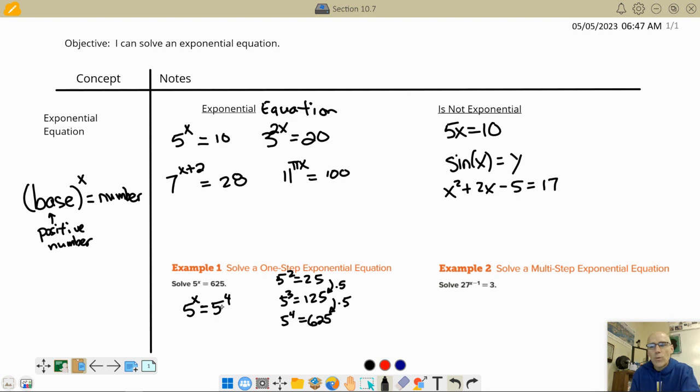Now think about this. When we're asking ourselves, what do I have to raise 625 to to get, what do I have to raise 5 to to get 625? I'm really answering the question. What do I have to raise 5 to to get 625?